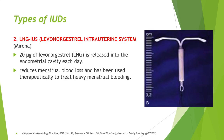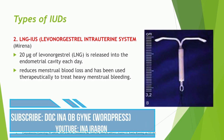The LNG-IUS or levonorgestrel intrauterine system, brand name Mirena, releases 20 micrograms of levonorgestrel into the endometrial cavity each day. This system is good for 5 years. It reduces menstrual blood loss and has been used therapeutically to treat heavy menstrual bleeding, which is one of the non-contraceptive benefits of Mirena or the LNG-IUS.